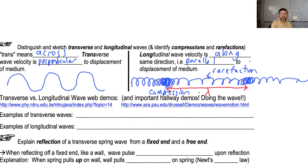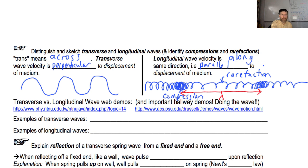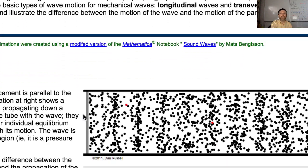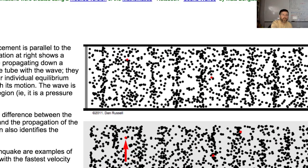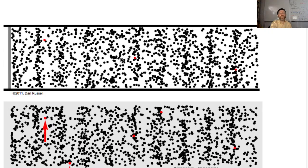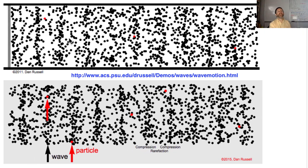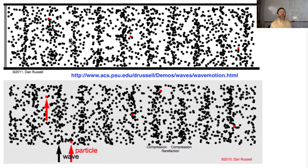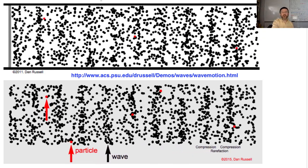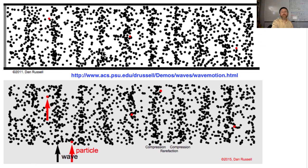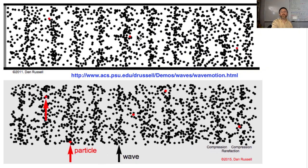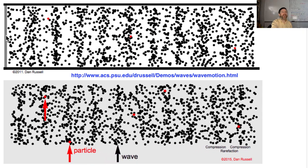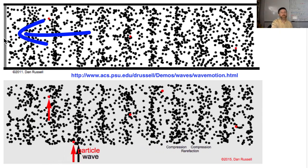Here are some more examples of these kinds of waves. We saw the transverse wave already. Here is another example of a longitudinal wave in a gas. All the little dots represent molecules. Look at the wave — the parts that are all scrunched together are compressions, and the parts in between where the molecules are spread apart are rarefactions. This wave is caused by a piston moving to the right and to the left repeatedly, just like a speaker.